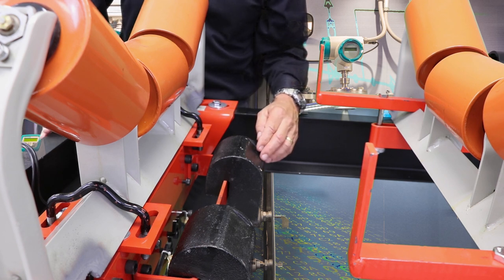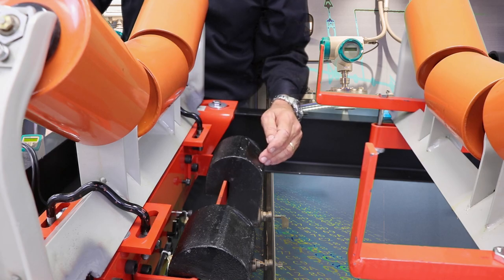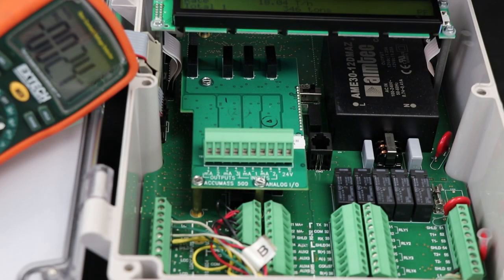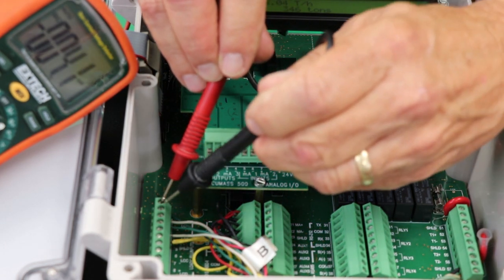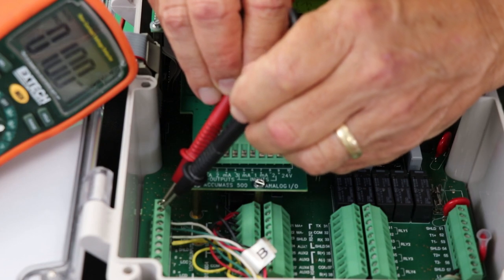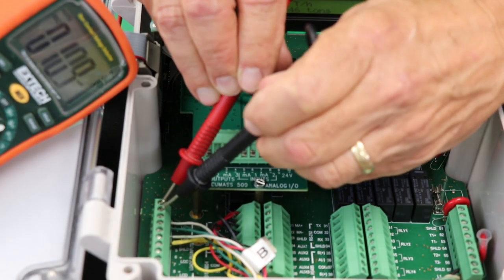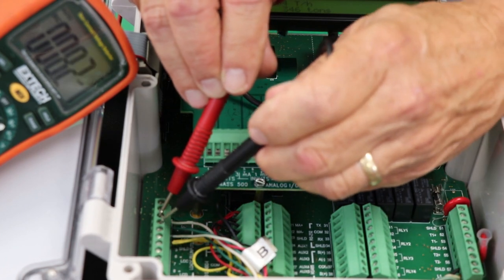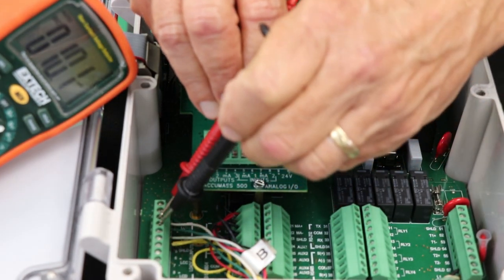These two calibration weights were chosen because the actual weight value that's marked on each one is virtually identical. We've got the calibration weights installed and now we're going to measure the signal voltages from each load cell. Load cell A is reading 11.0 millivolts and load cell B is reading 10.1 millivolts.